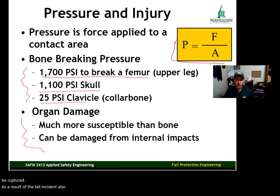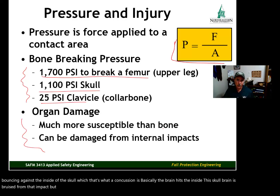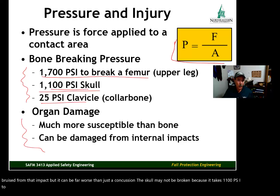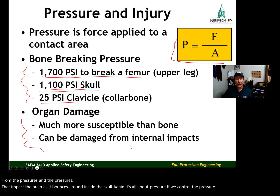Also, your brain — it's encased in the skull, but when a fall occurs, it doesn't keep the brain from bouncing against the inside of the skull, which is basically what a concussion is. The brain hits the inside of the skull and is bruised from that impact, but it can be far worse than just a concussion. The skull may not be broken because it takes 1,100 psi to break a skull, but the brain can be mangled from the pressures as it bounces around inside the skull. Again, it's all about pressure — if we control the pressure, we can control the damage.